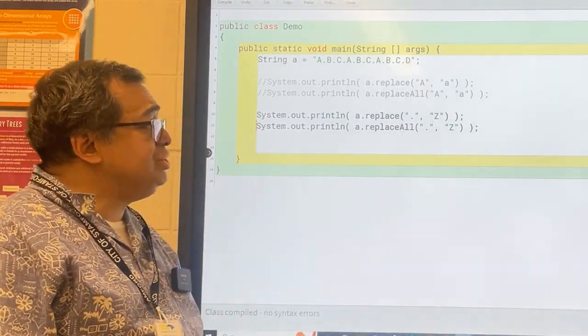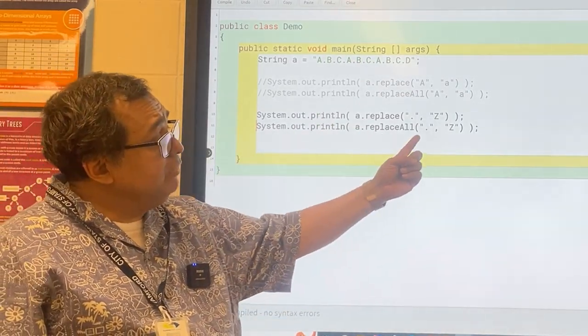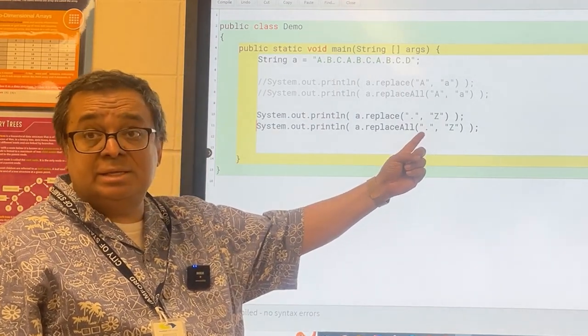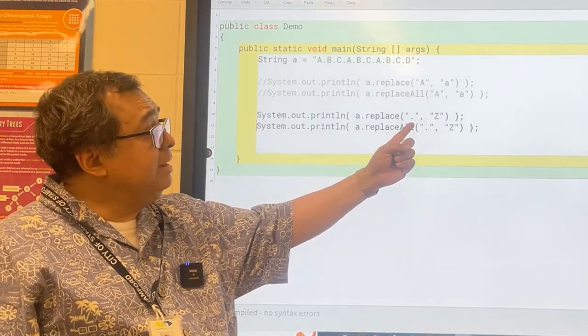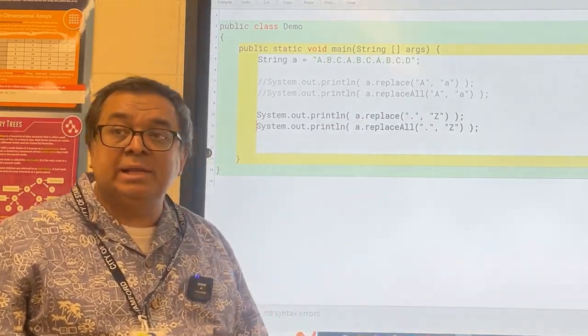So the question is, why do we have these two methods? The reason why is that the second one takes a regular expression as its input, and the first one does not. And that's the difference between the two. Now your next question is, what's a regular expression? Let's try to figure out the objective thing.